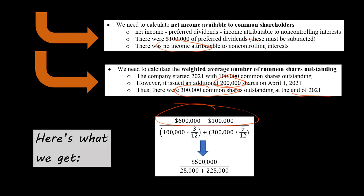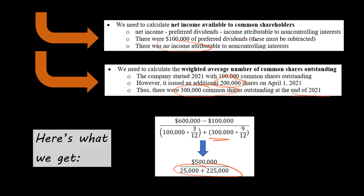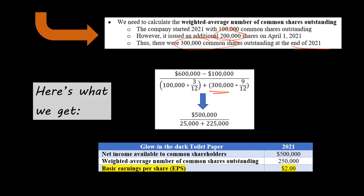Going back to our formula: the net income available to common shareholders is $600,000 minus preferred dividends of $100,000. For the weighted average shares, there were 100,000 shares for three-twelfths of the year, which equals 25,000, and 300,000 shares for nine-twelfths of the year, which equals 225,000. So our denominator is 25,000 plus 225,000, giving us 250,000 weighted average common shares outstanding.